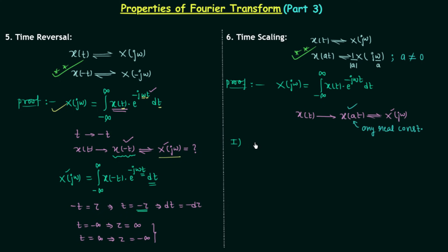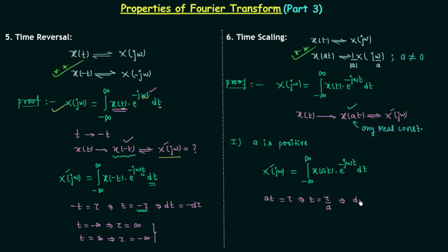In the first case, a is positive. The new Fourier transform X(jω') equals integration from minus infinity to infinity of x(at) multiplied by e^(-jωt) dt. Let at equal τ, which implies t equals τ/a and dt equals dτ/a. Since a is positive, when t equals minus infinity tau equals minus infinity, and when t equals infinity tau equals infinity, so the range of integration remains the same.